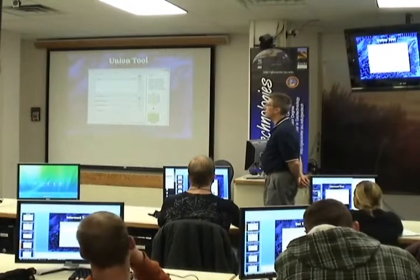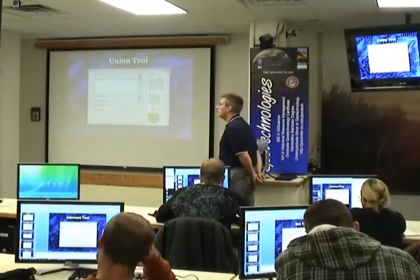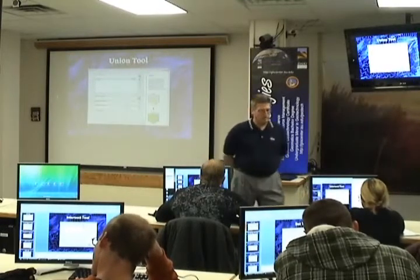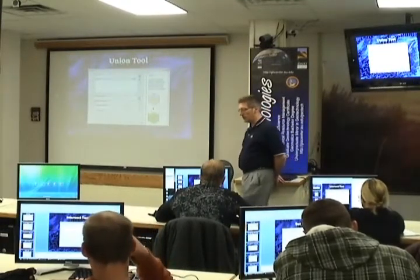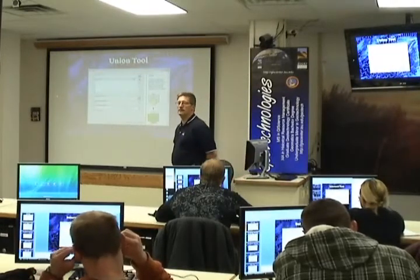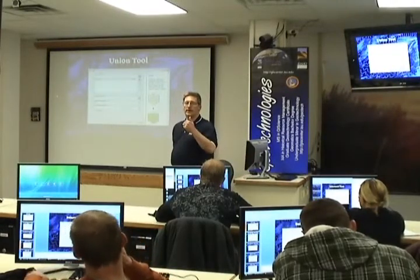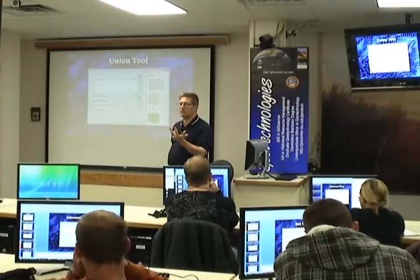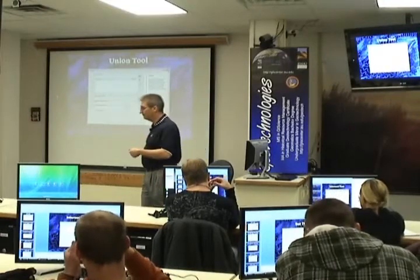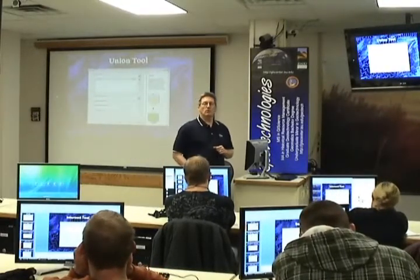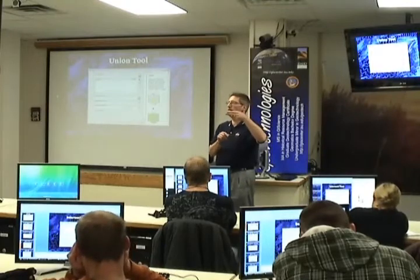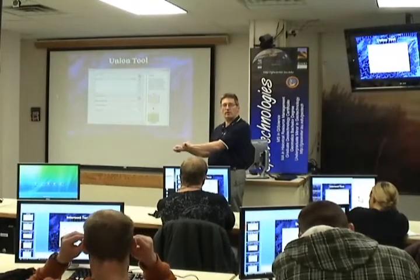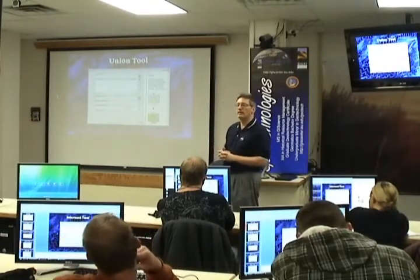So we have all these input features, and it doesn't have to be limited to just two. Years ago when we were doing unions in ARC-INFO workstation — the black box — we would do a union between two coverages, get an output. If we had to union twenty coverages together, we would union two of them, get the output, take that output, union it to another one, and keep going until we had all twenty put together.